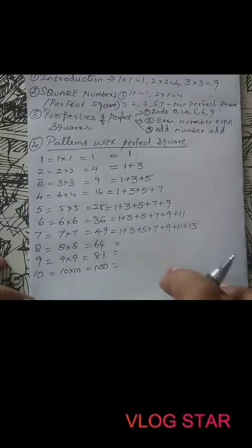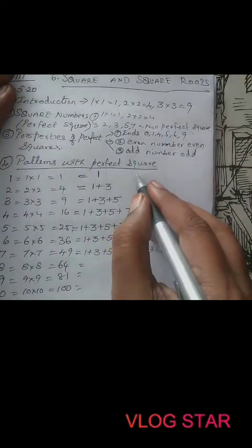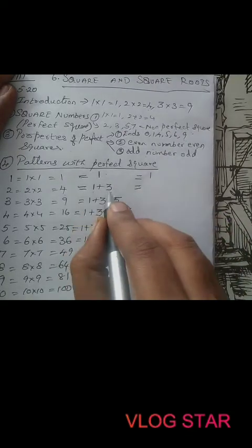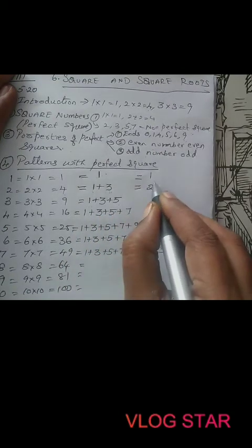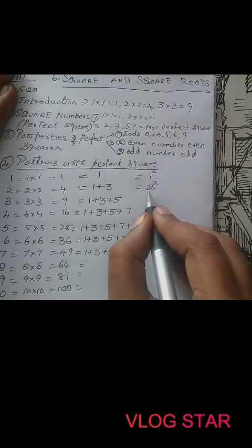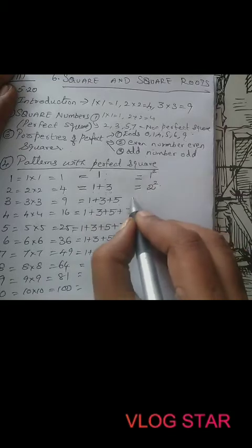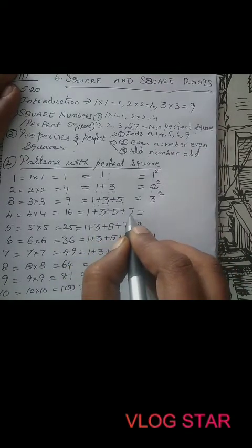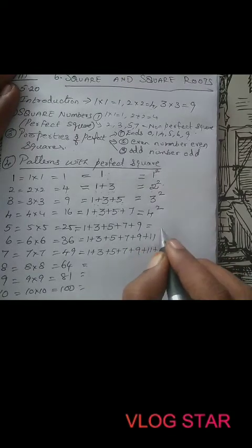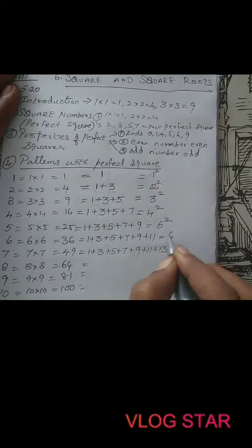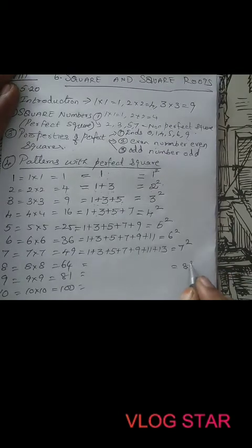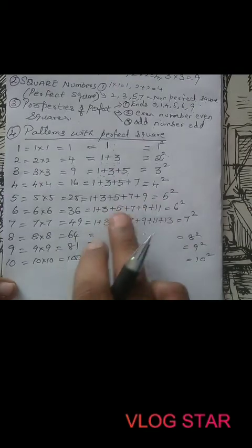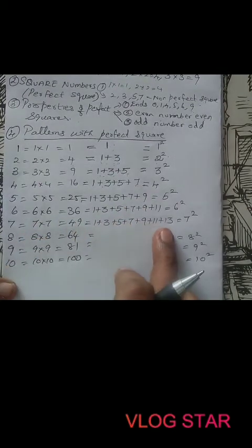Now for these, I am making you complete the pattern. For 1: there is 1 number, and 1 is 1 squared. For 1 plus 3: there are 2 terms, and the result is 2 squared. For 1 plus 3 plus 5: there are 3 numbers, so the result is 3 squared. For 1 plus 3 plus 5 plus 7: 4 numbers gives 4 squared. Continuing: 5 squared, 6 squared, 7 squared, 8 squared, 9 squared, 10 squared. In an exam, they will give you a pattern like this and ask you to find the sum — you add up and find how many terms there are.